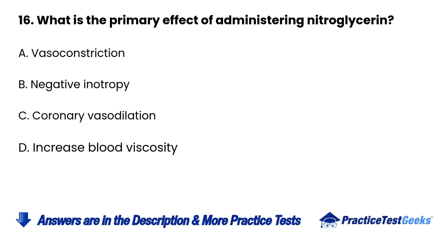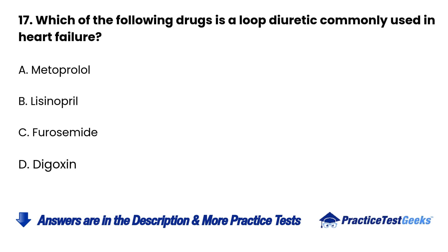Question 16. What is the primary effect of administering nitroglycerin? A. Vasoconstriction. B. Negative inotropy. C. Coronary vasodilation. D. Increase blood viscosity.